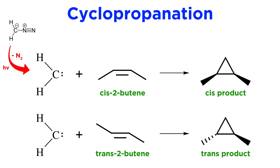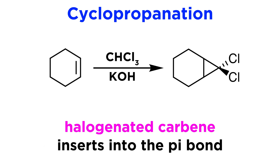We can observe the same reaction with trans-2-butene and see that again the stereochemistry is retained. We could do the same thing with halogenated carbenes instead of the methylene carbene if it was deemed desirable to have halogen functionality on the product, such as this reaction of cyclohexene with chloroform in the presence of potassium hydroxide.